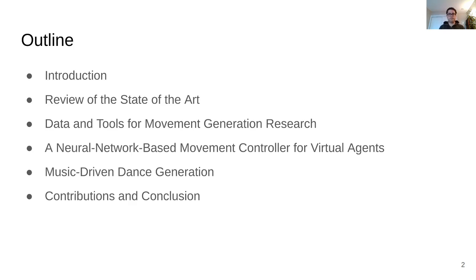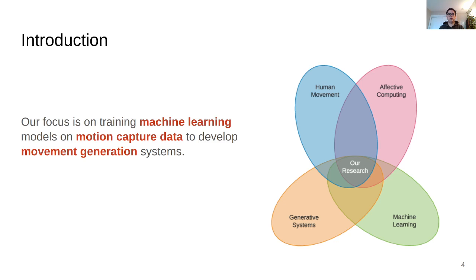So first, the introduction. Our focus in this thesis is on training machine learning models on motion capture data to develop movement generation systems. The research that we present is at the intersection of generative systems, machine learning, human movement, and affective computing.